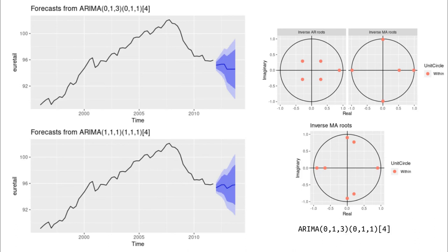The main message is that sometimes taking regular differences is not enough — we have to take seasonal differences as well. The second idea is to trust your eyes: auto.arima is nice but not magical. Click on the next video to see a demonstration in RStudio showing how we can use our brain instead of auto.arima in order to build a better model.